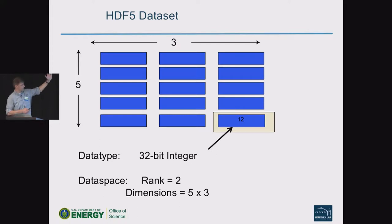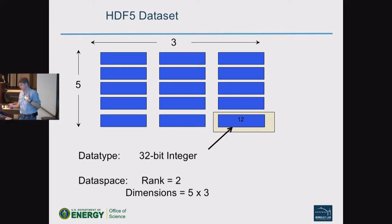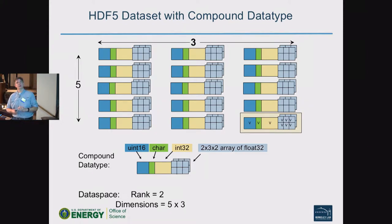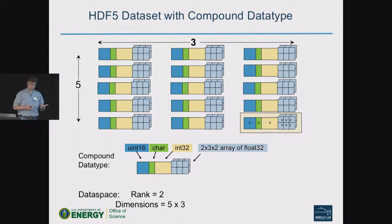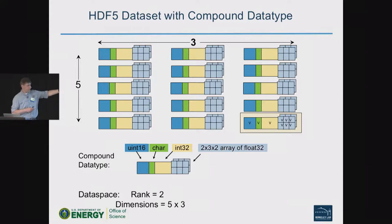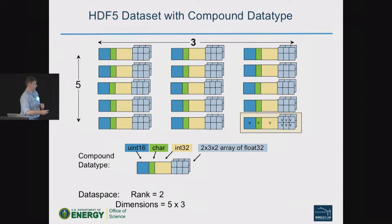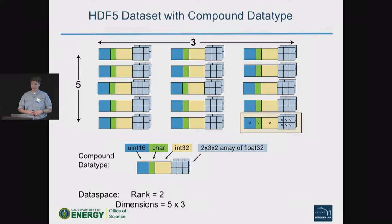To summarize: a simple example is a two-dimensional, five-by-three array with 32-bit integers — very straightforward. A more complicated one is also three-by-five, but each element is a compound type like a struct. The struct in this case has four fields: a 16-bit unsigned integer, a character for text, a 32-bit signed int, and a field that's actually a two-by-three-by-two float32 array. You can make these arbitrarily nested — compound fields inside compound fields, arrays of everything you'd like.